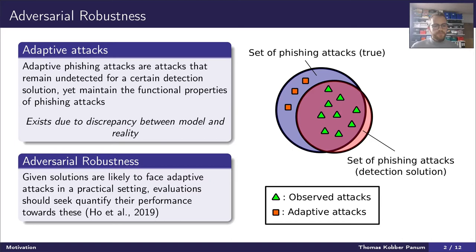So when we say adversarial robustness, we basically talk about to which extent these phishing detection solutions account for these types of attacks and to which extent have they evaluated the performance on these.